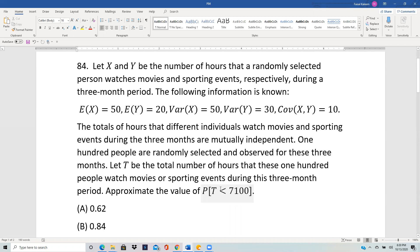So first we calculate the total number of hours watched by one person. From the problem, it's very clear that all we're caring about is the total number of hours watched, and X is for the movies and Y is for the sporting events.